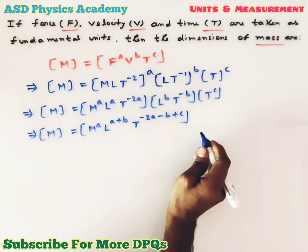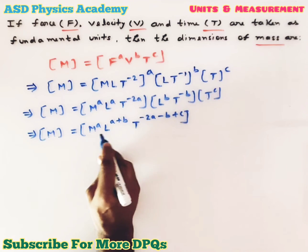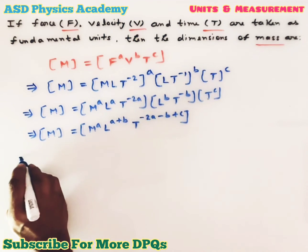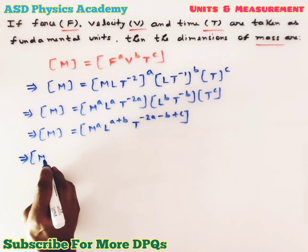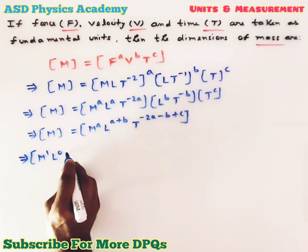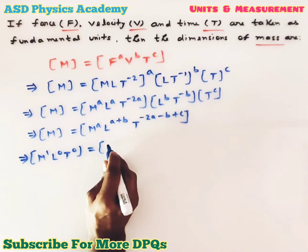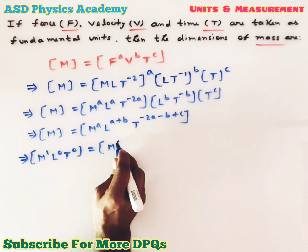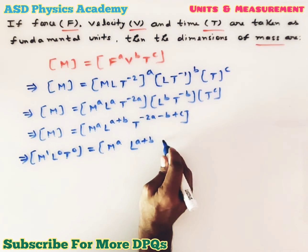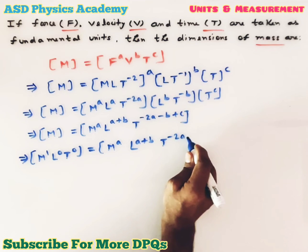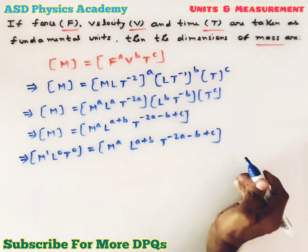On the left side we only have mass, but on the right side we have mass, length, and time. To compare powers, we write the left side as M¹ L⁰ T⁰, and the right side as M to the power A, L to the power (A + B), and T to the power (−2A − B + C).